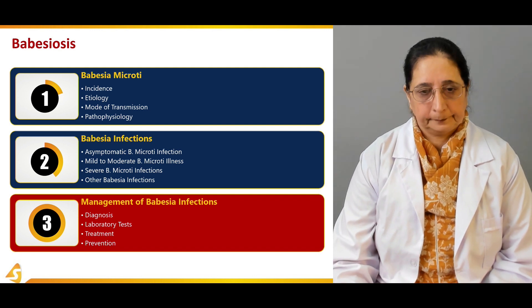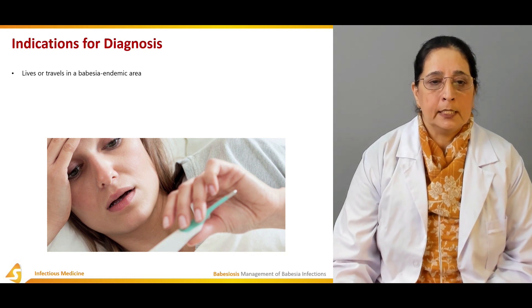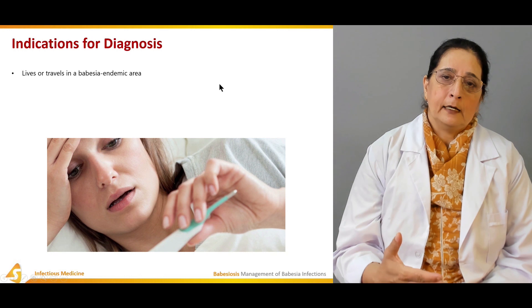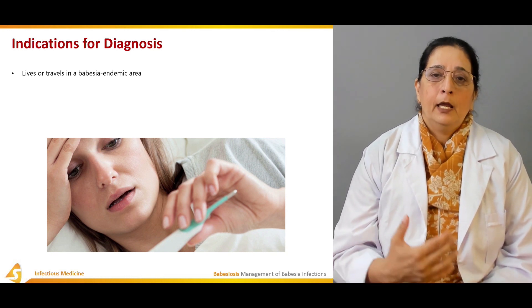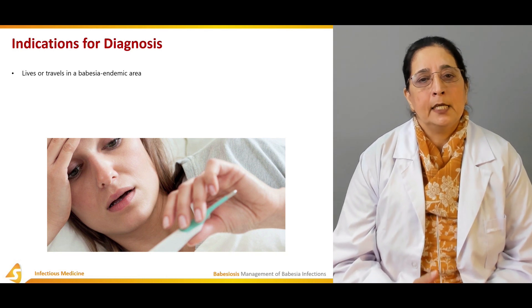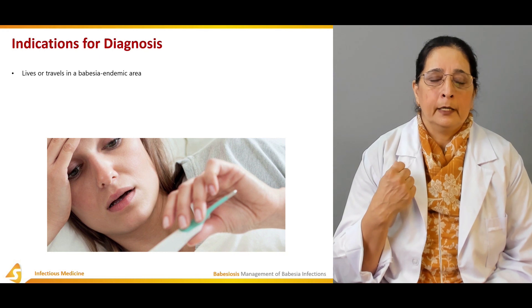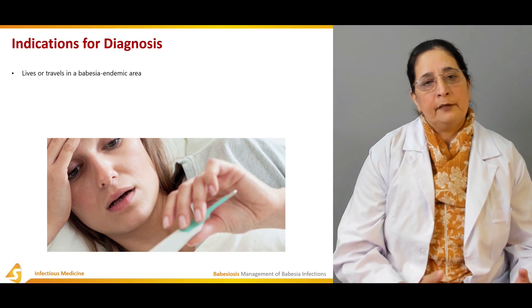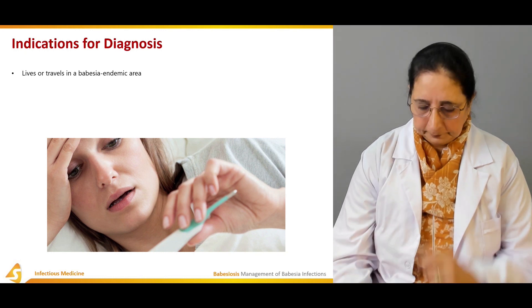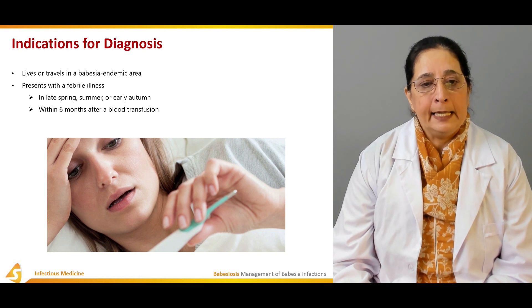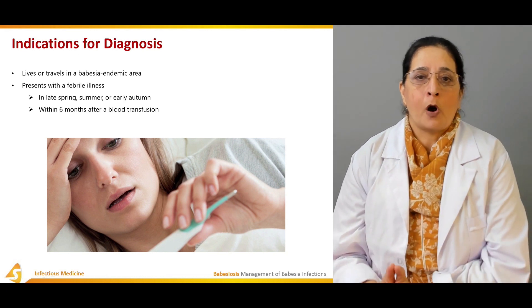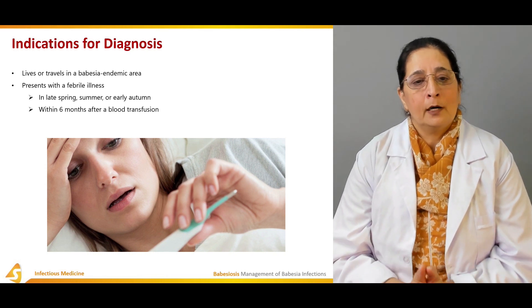Indications for diagnosis: if a person lives or travels in a Babesia-endemic area, and if the illness occurs after travel to areas where Babesia is common. The patient may present with a febrile illness in late spring, summer, or early autumn — it is more common from May to October.